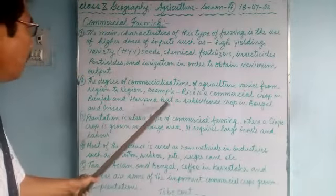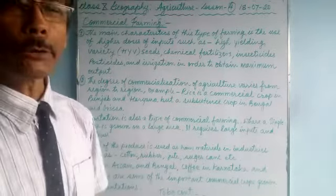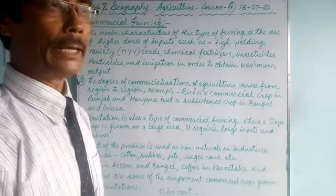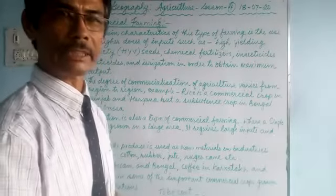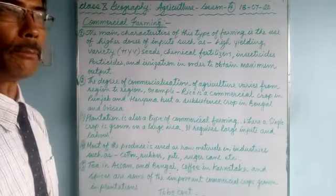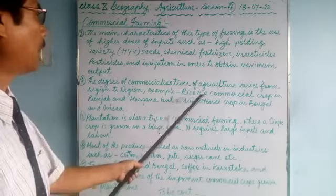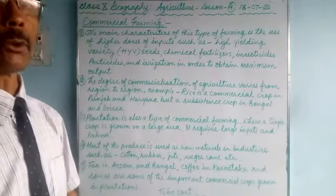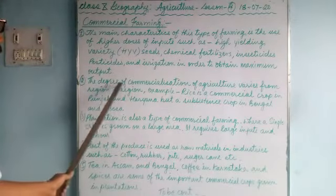But rice is a subsistence crop in Bengal and Orissa, where people grow rice to support their family. Whatever remains after domestic use, they will sell. This is subsistence farming. In contrast, Punjab and Haryana grow high quality rice to export to other countries. You can see how commercialization varies from region to region.